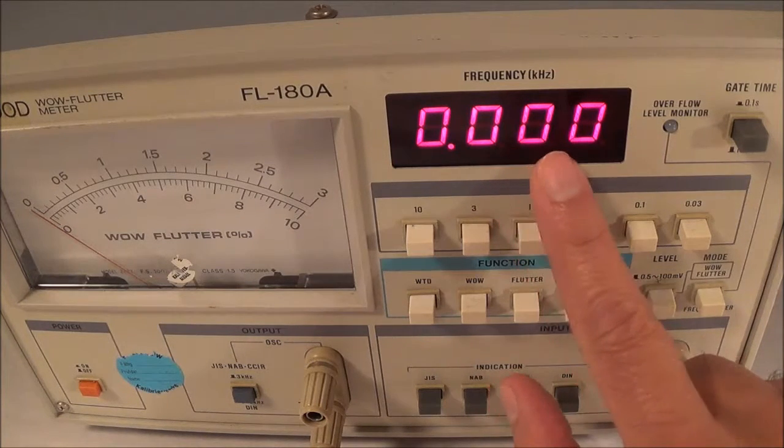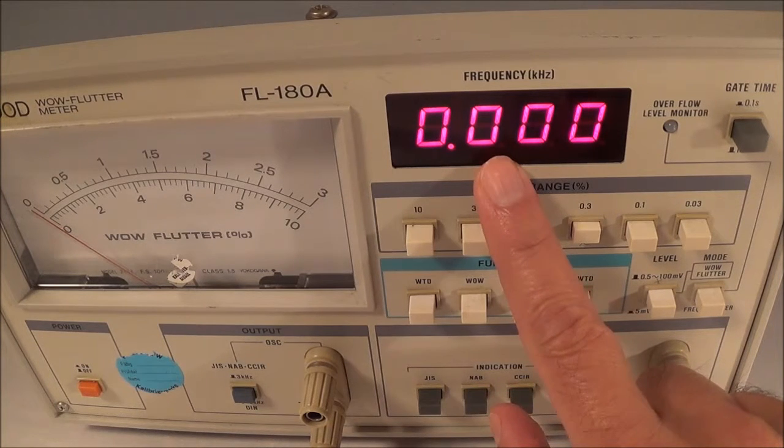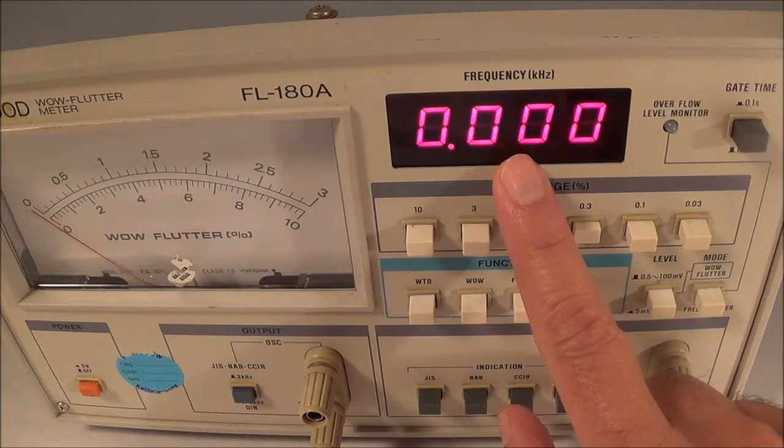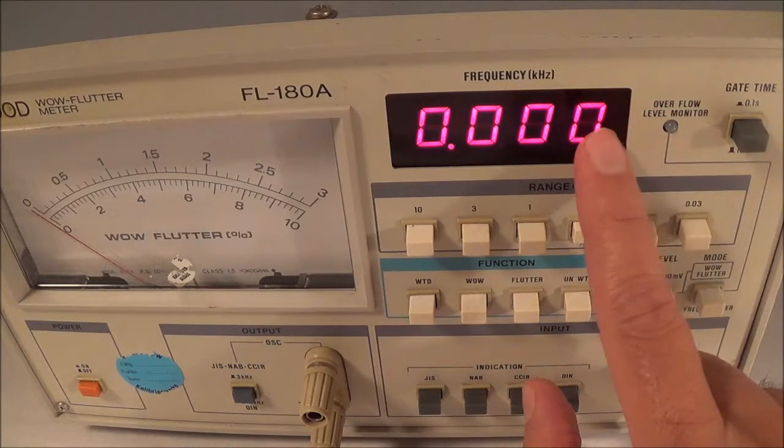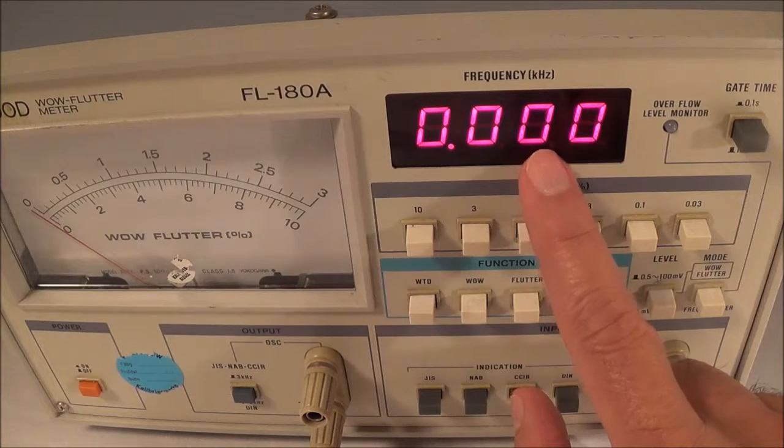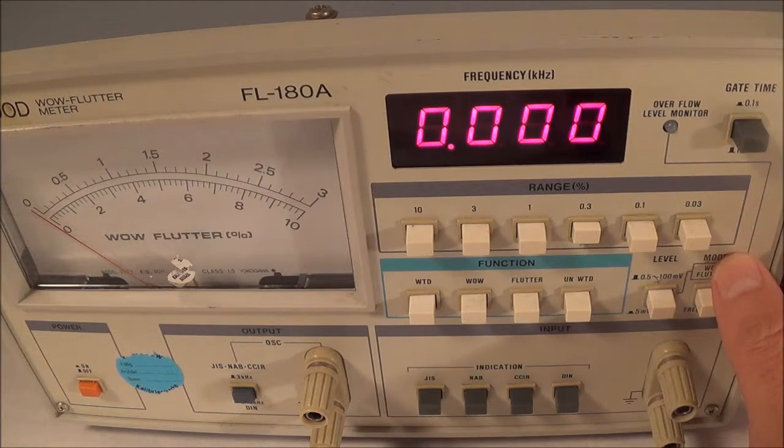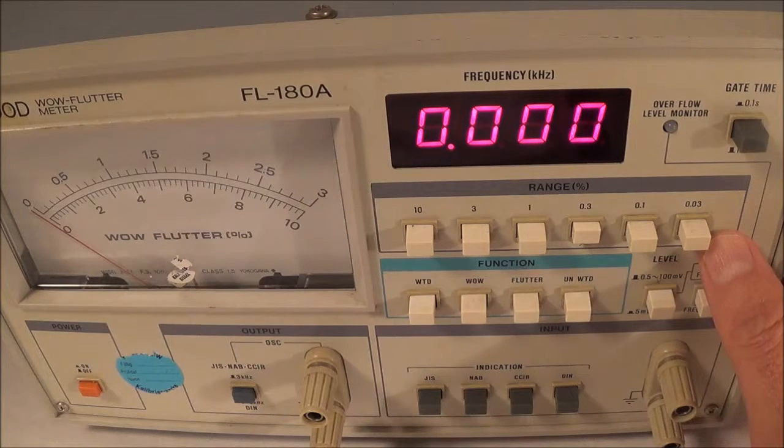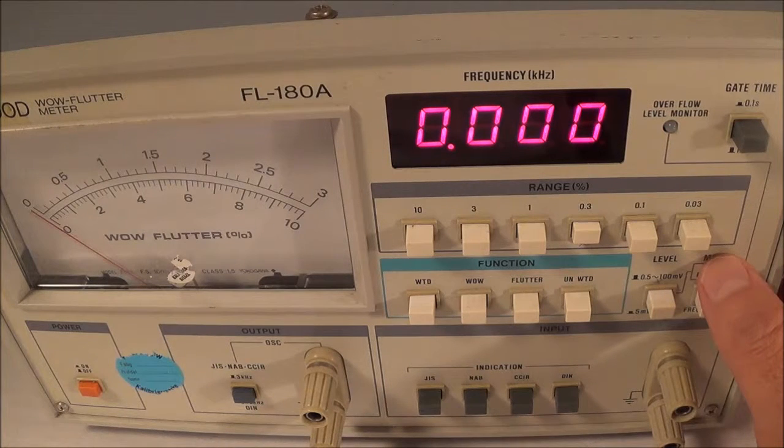As far as the counter itself, it's a four digit counter. You can select either a line frequency or a crystal controlled time base for the counter. The counter itself is supposed to measure from 10 hertz to 9999 hertz. You get your mode button here. With the mode button you can either select your measurement mode, either frequency or wow and flutter.